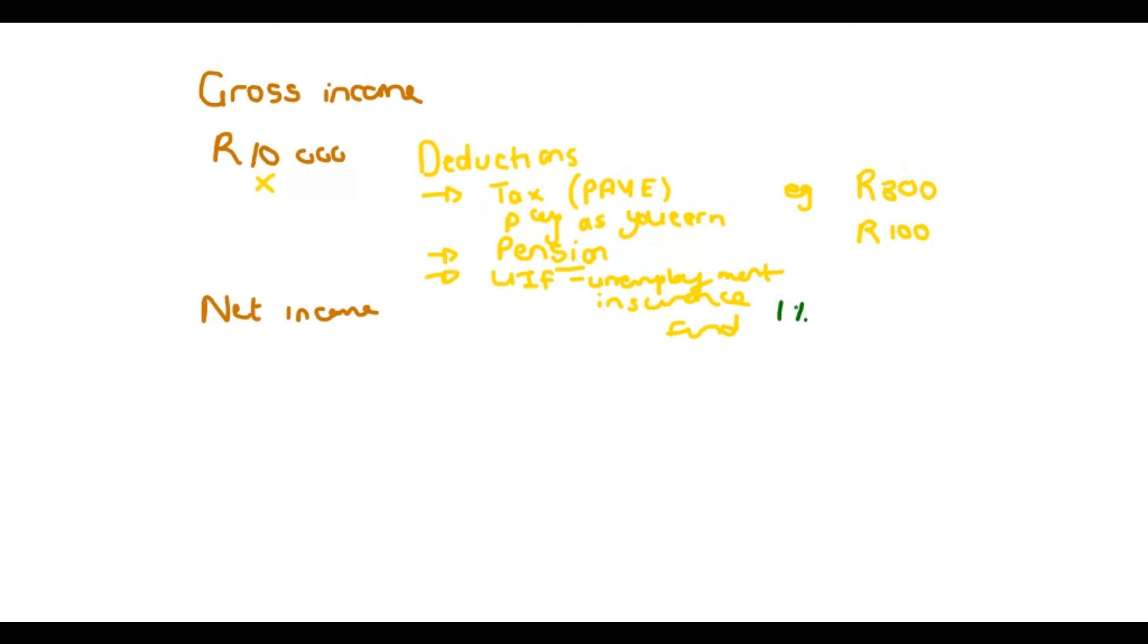And then your employer pays another 1% of this. So in total, 2% of your money goes to the Unemployment Insurance Fund. Now if we determine 1% of this 10,000 Rand salary, it is 100 Rand, because on your salary, you only pay 1%.